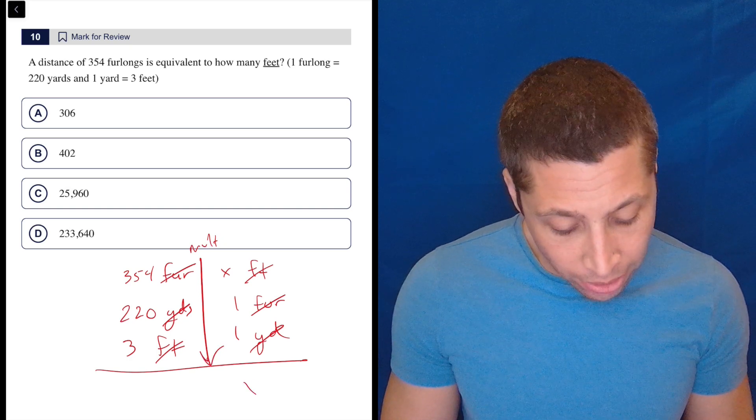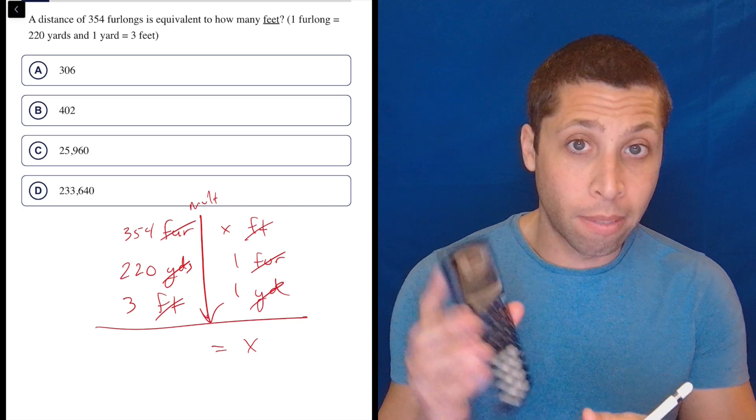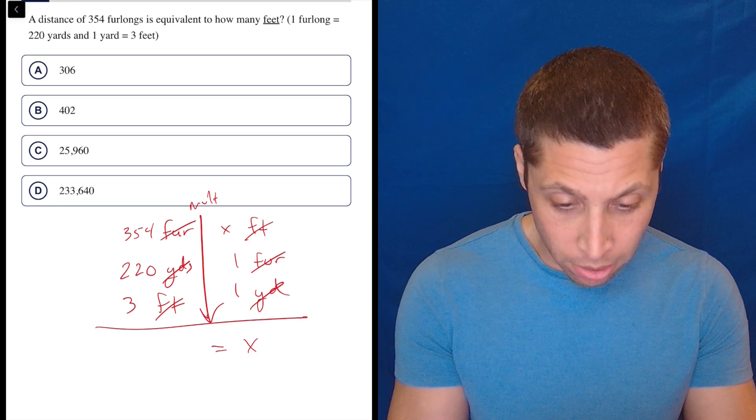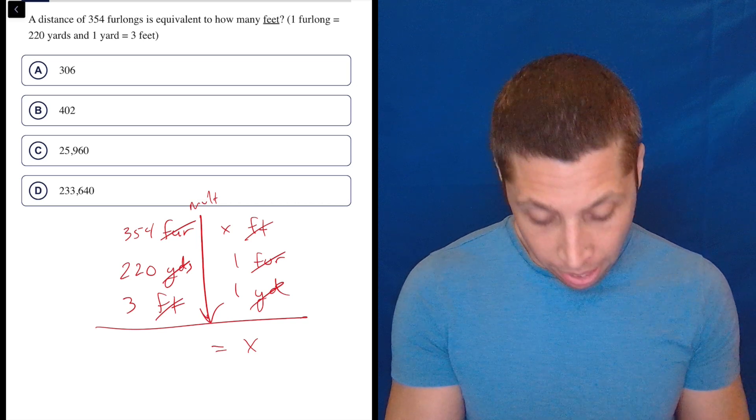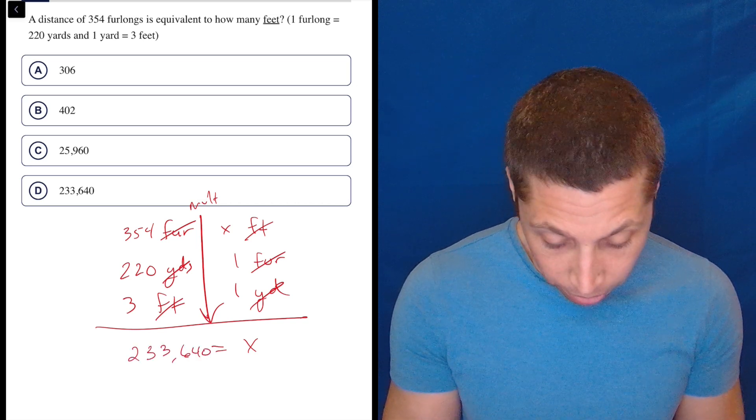So on the right side, it's easy. It's just X times one times one. And on the left side, we're just going to get a calculator and do 354 times 220 times three. And we get some huge number that is clearly choice D, but I will write it out anyway.